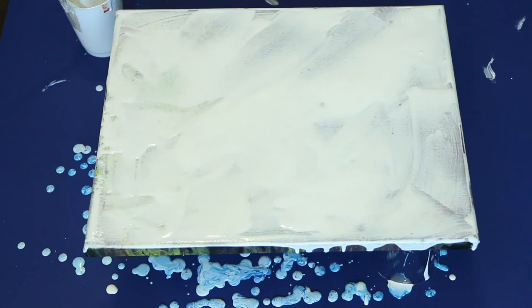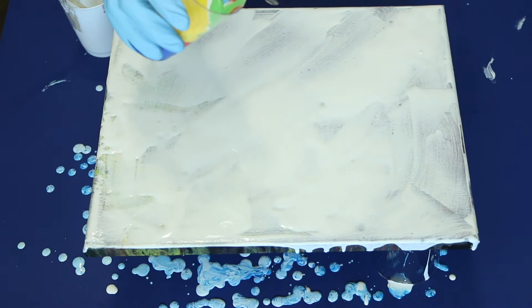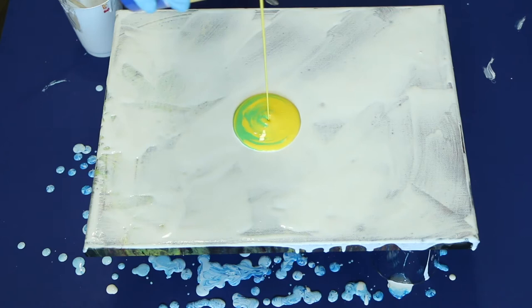The next technique is called a dirty pour. To start this technique, you're going to do all the first steps up until pouring all of the colors into a single cup. Once you have all the colors in a single cup, you're going to pour them directly onto the canvas instead of flipping over the cup like you did in flip cup.